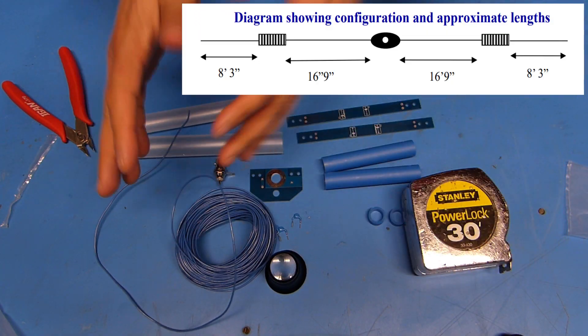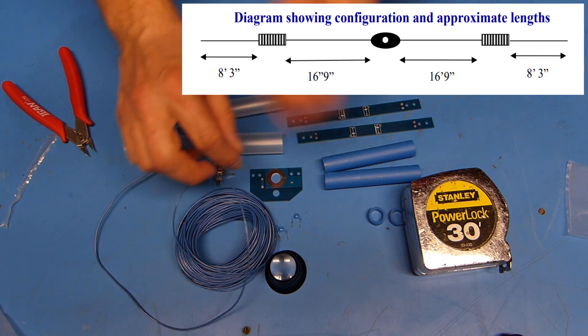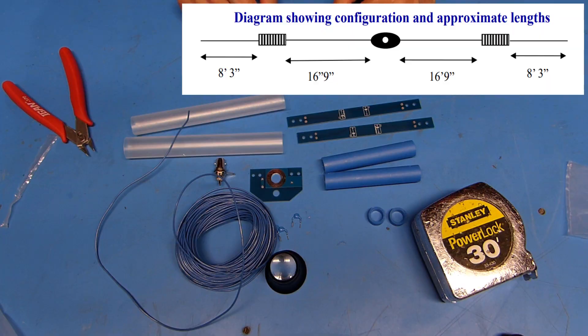So the next step is to measure out and cut some sections of wire. So I'm going to go over on the other side of the cellar, stretch out my tape measure, and take care of that now.